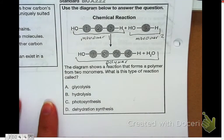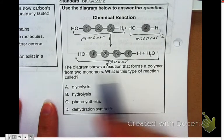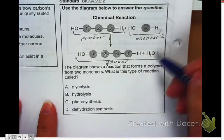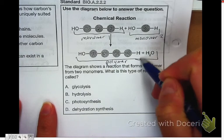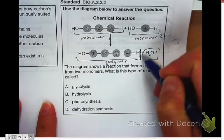And the diagram shows a reaction that forms a polymer from two monomers. What type of reaction is this? One of the things that comes out—sorry, the polymer goes to here—the thing that's coming out is water.